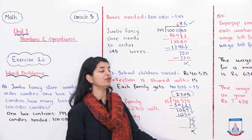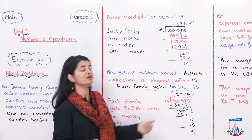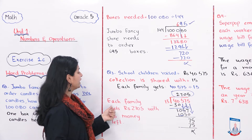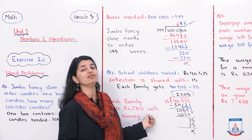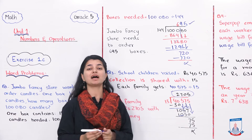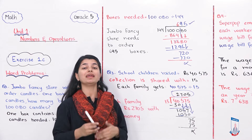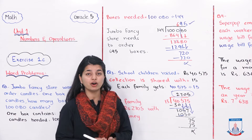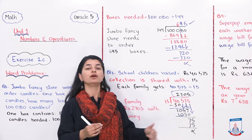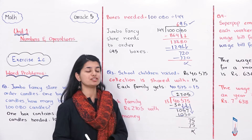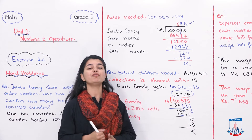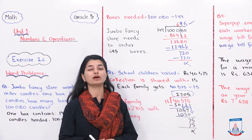So how much will each family get? I will write in the statement: Each family gets Rs 2,705 with no money left over. The question asks how much each family receives and whether any money remains — so we also state that no remainder is saved and no money is left. Every family got Rs 2,705. With that, question number 3 is completed.